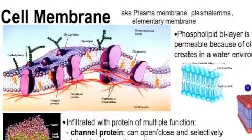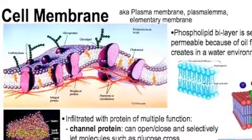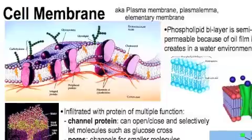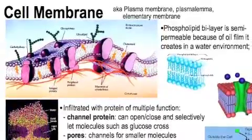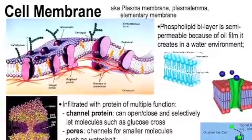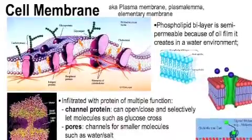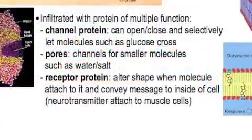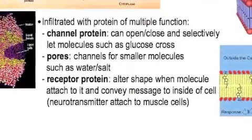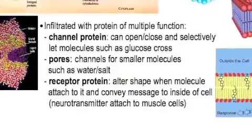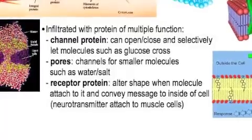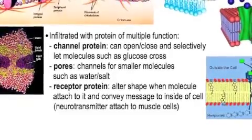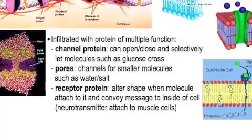The cell membrane surrounds all cells. It is also known as the plasma membrane, the plasmalemma, or the elementary membrane. Its main construction material are phospholipids, forming a bilayer with the non-polar tails pointing towards one another. This creates an oil film surrounding the cells, which doesn't let water-loving or hydrophilic substances through. It's known to be semi-permeable. This cell membrane is infiltrated with proteins of multiple functions. Channel proteins can open or close and selectively let molecules such as glucose cross. Pores are channels for smaller molecules such as water, salts, or ions. And receptor proteins alter their shape when specific molecules attach to them and convey a message to the inside of the cell.